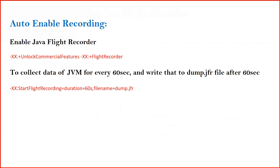There are two recording modes: auto enable recording and manual. For auto enable recording, first enable the two parameters in your JVM. Then you can collect JVM data, for example every 60 seconds, and dump it to a particular file. The parameter for this is -XX:StartFlightRecording=duration=60s,filename=dump.jfr. The option to enable auto recording is startbyrecording. These parameters can be specified with your JVM arguments.